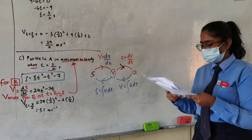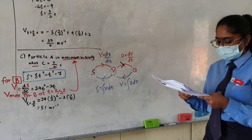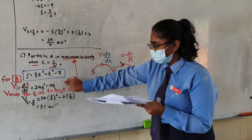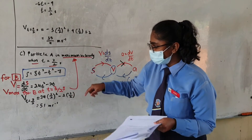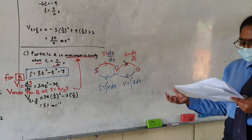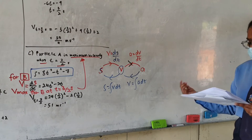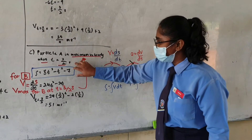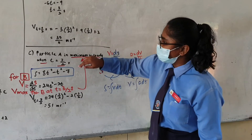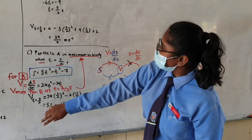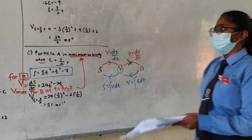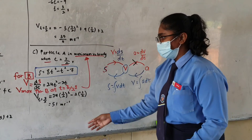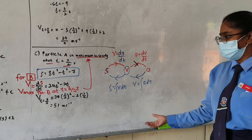For question C, another particle — particle B — moves along the same straight line and passes through the fixed point O. Its displacement is given as 8t cubed minus t squared minus 7. We have to find the velocity of particle B when particle A achieves maximum velocity. When particle A achieves maximum velocity, the time is 3 over 2 seconds, which we already found in A2. We need to substitute this value into the velocity function of particle B, but we don't have the velocity function of particle B yet.